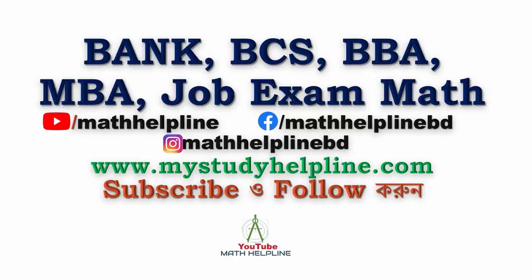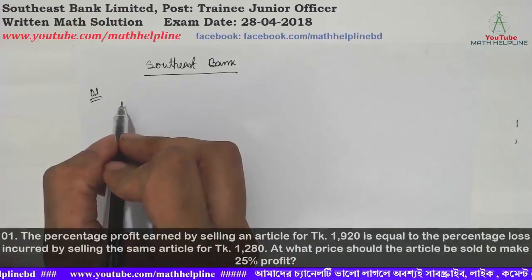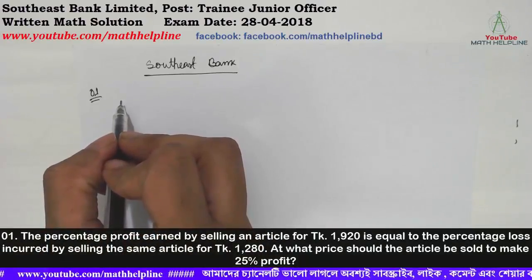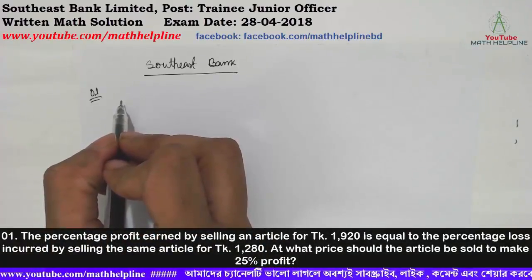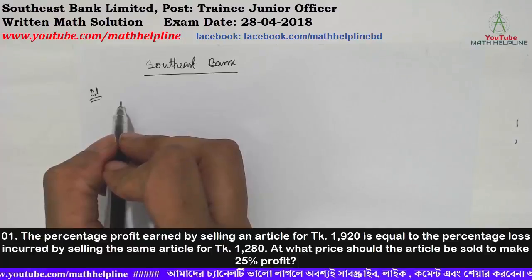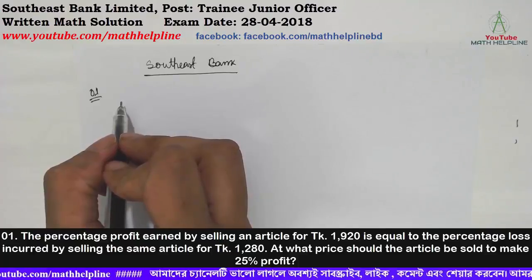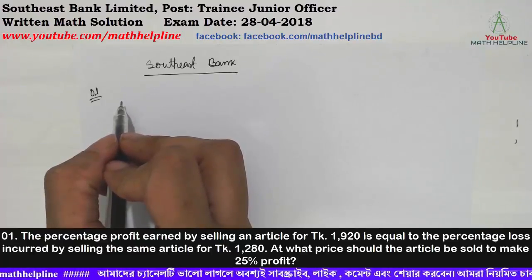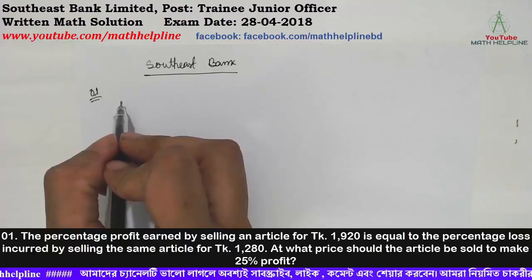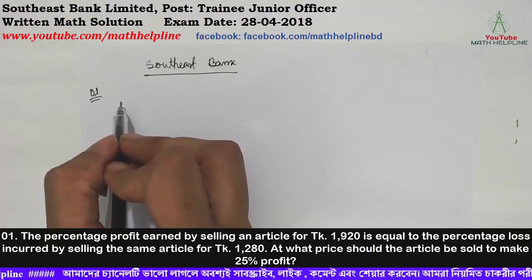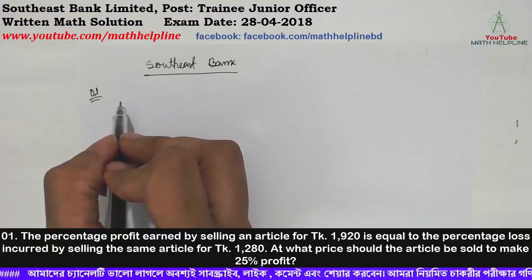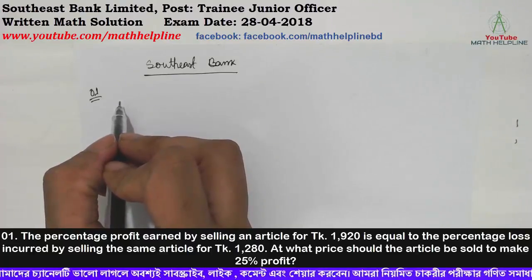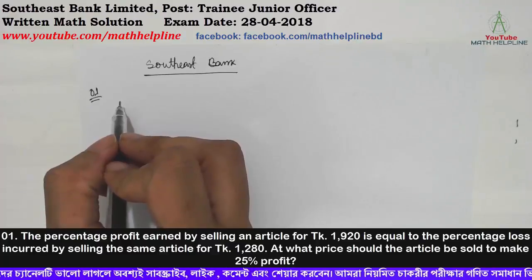First problem: The percentage profit earned by selling an article for taka 1920 is equal to the percentage loss incurred by selling the same article for taka 1280. At what price should the article be sold to make 25% profit?